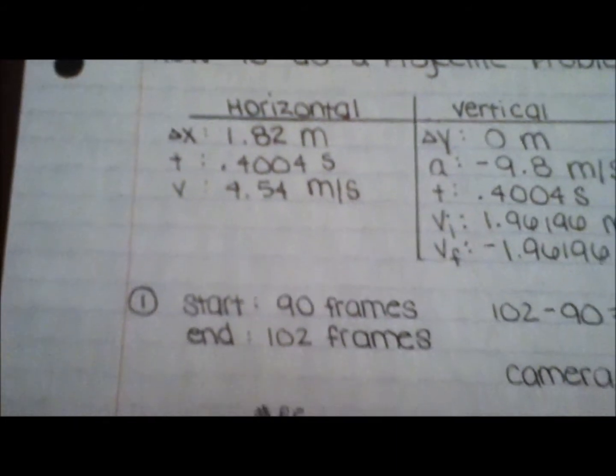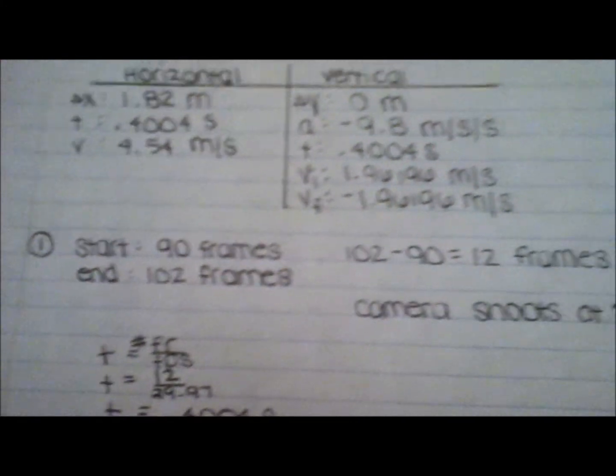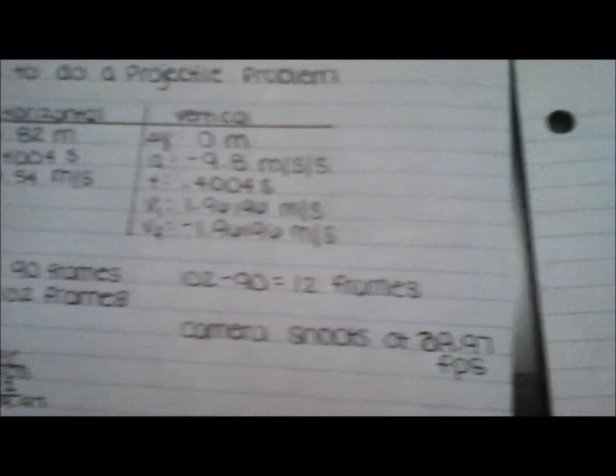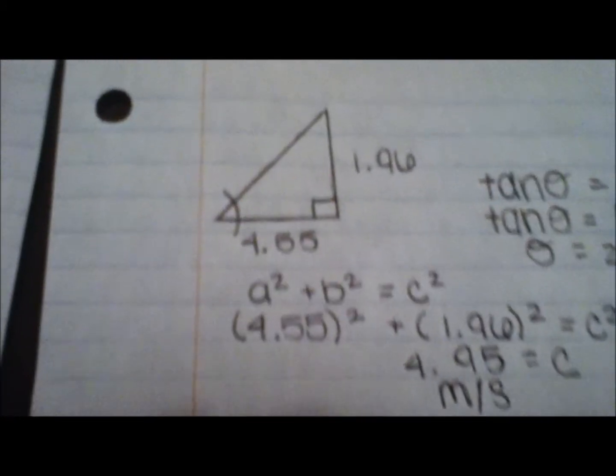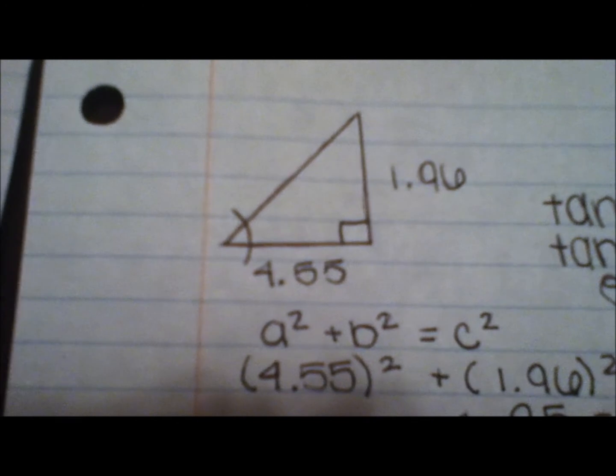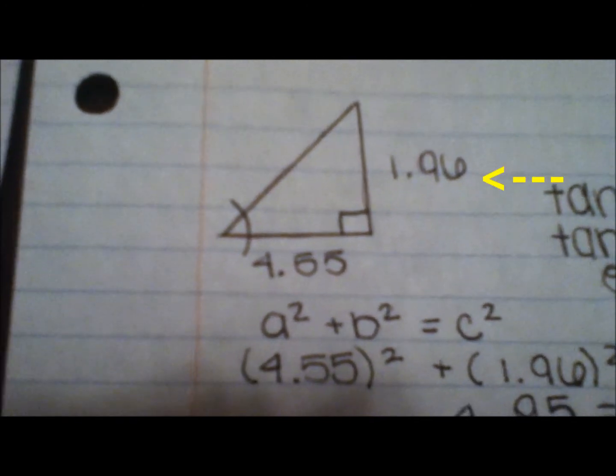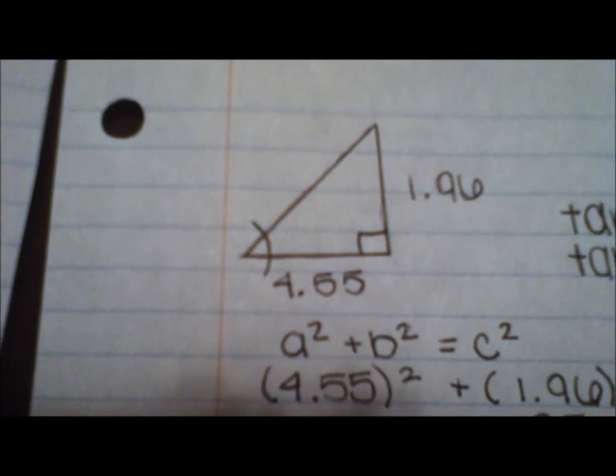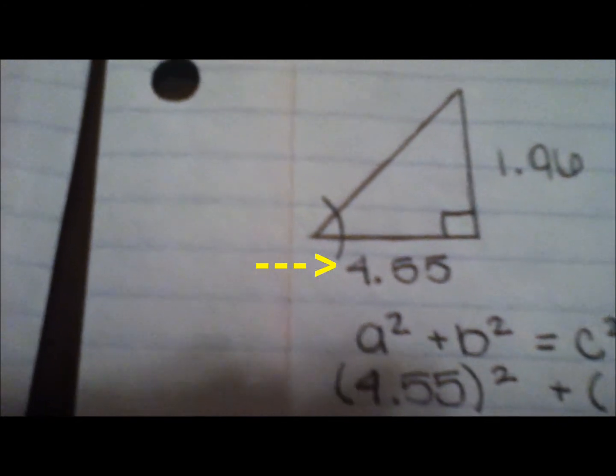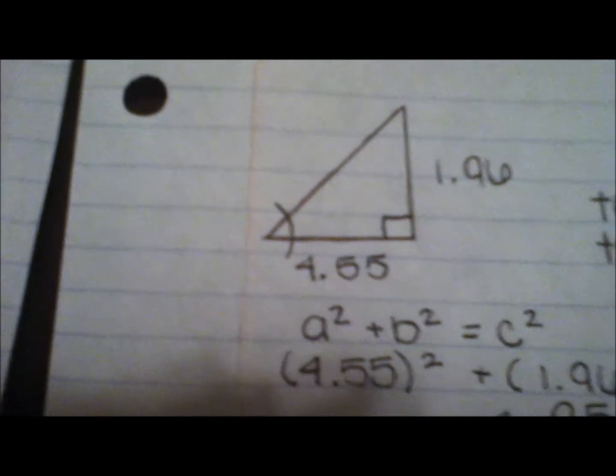Now that the chart is completed, find the angle which Alexa took off the ground. Do this by setting up a right triangle like this, putting the vertical velocity on the vertical part of the triangle, and the horizontal velocity on the horizontal part of the triangle.